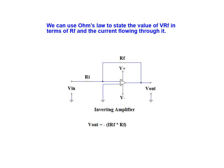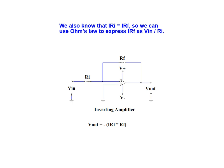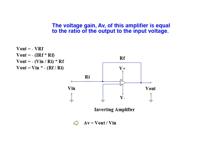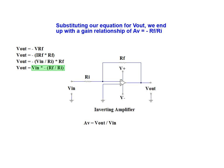We can use Ohm's law to state the value of VRF in terms of the resistance and the current flowing through it. We also know that the current through RI is equal to the current through RF. So we can use Ohm's law to express the current through RF as V-in over the value of RI. Therefore the output voltage equation for this circuit configuration can be expressed as V-out equals V-in times negative RF over RI. The voltage gain, or AV, of this amplifier is equal to the ratio of the output to the input voltage. Substituting our output voltage equation into our gain equation and simplifying, we arrive at a final relationship: AV equals negative RF over RI.